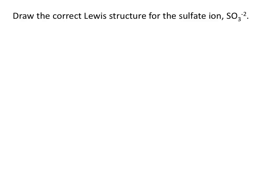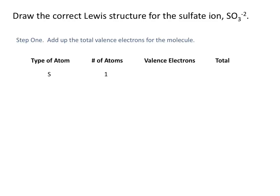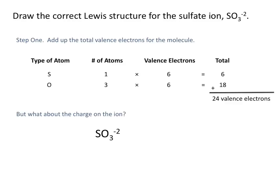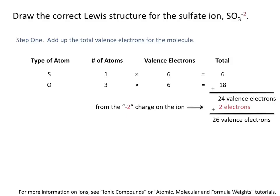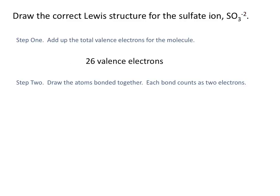Let's look at one more example: drawing the correct Lewis structure for the sulfate ion, SO3 2-. First, we add up the total valence electrons. We have one sulfur atom with six valence electrons (group 6), and three oxygen atoms each with six valence electrons, giving 24 valence electrons. Because the ion has a net charge of minus two, the molecule has two extra electrons, so we increase our total to 26 valence electrons.